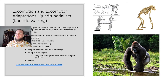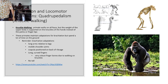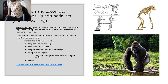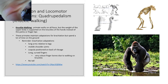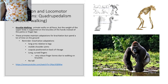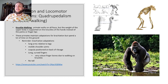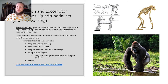Next is knuckle walking — primates walking on all fours where the weight of the upper body is supported on the knuckles. They move forward on their knuckles; their knuckles are huge and robust enough to support their weight. They have adaptations for brachiation but spend most of their time on the ground — they can brachiate and move their shoulder joints, but mostly knuckle walk. They have long arms relative to legs and mobile shoulder joints, the same as brachiators. There's a video of a gorilla knuckle walking.